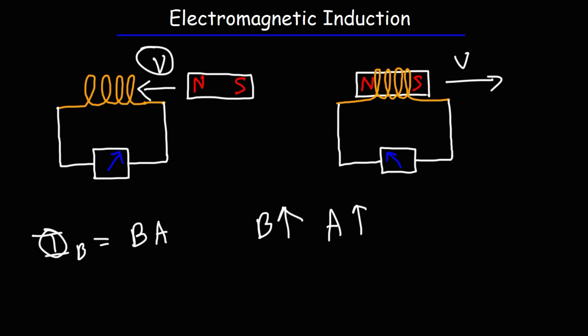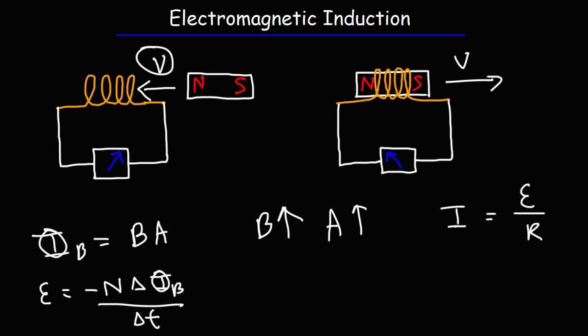Let's talk about some formulas that describe this process. The induced EMF, which is essentially voltage measured in volts, is equal to negative N — which represents the number of turns in the coil — times the rate at which the flux is changing. The faster you move the magnet into the coil, the greater the rate of change of flux, giving you a greater induced EMF. With a greater induced voltage, there's going to be a larger induced current, because current and voltage are directly related. That's why the speed at which you move the magnet has a direct impact on the angle of deflection.